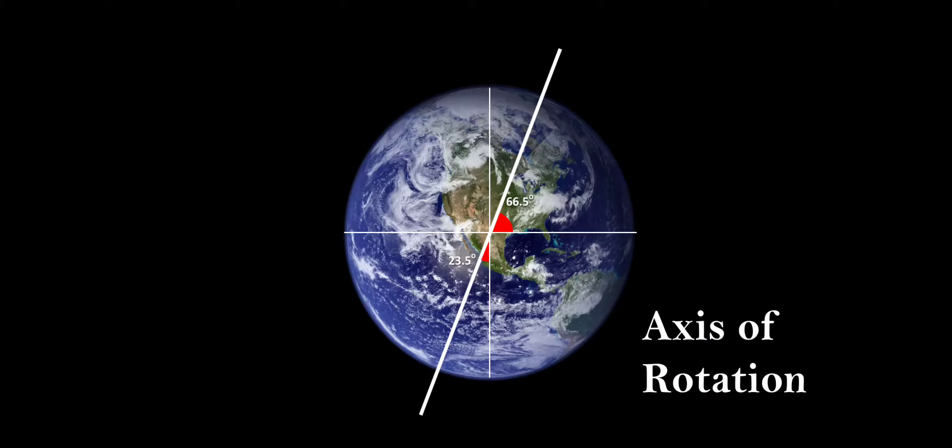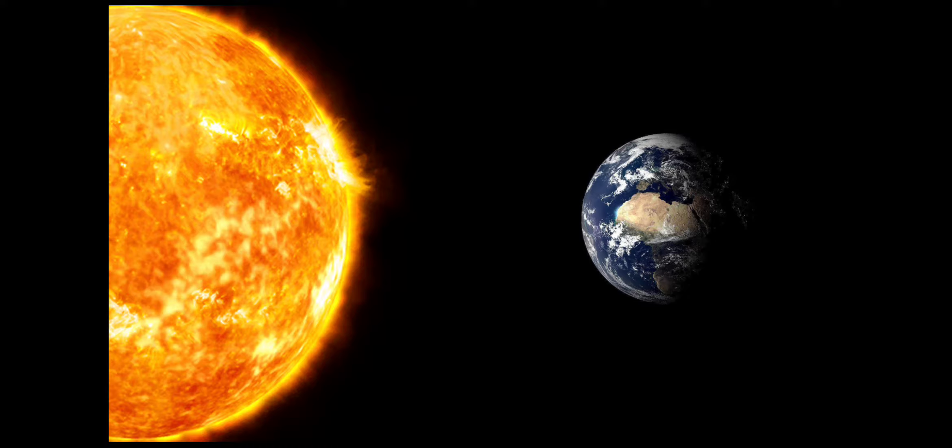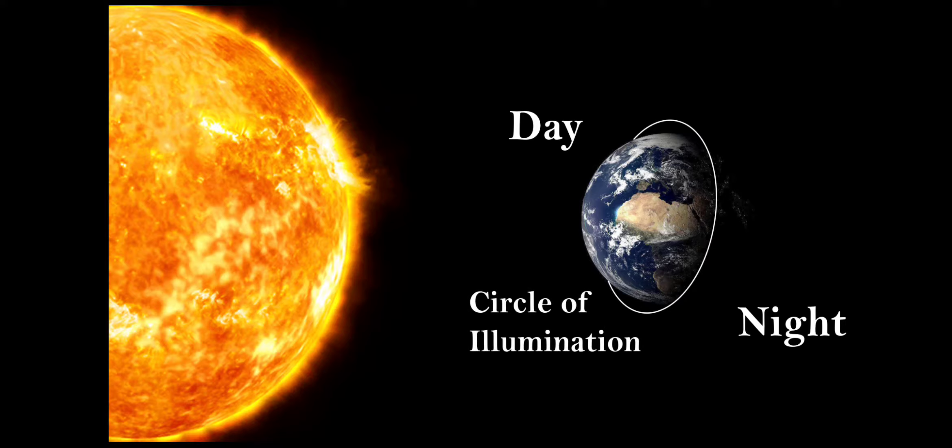The earth receives heat and light from the sun. Since earth is spherical, only one half of it gets light from the sun at a time. The portion facing the sun experiences day, while the other half away from the sun experiences night. The circle that divides day from night on the globe is called the circle of illumination.